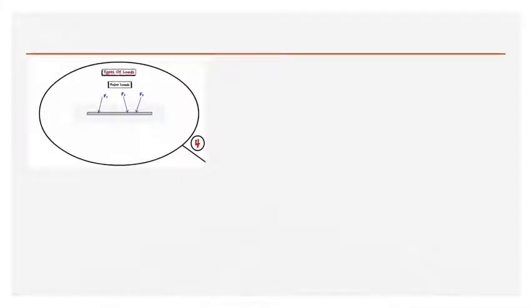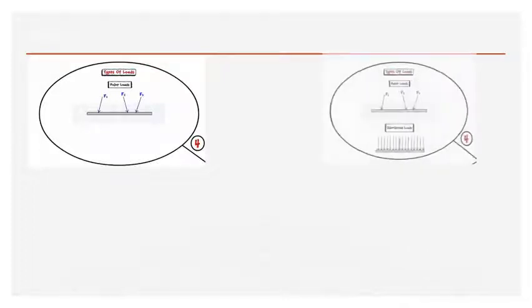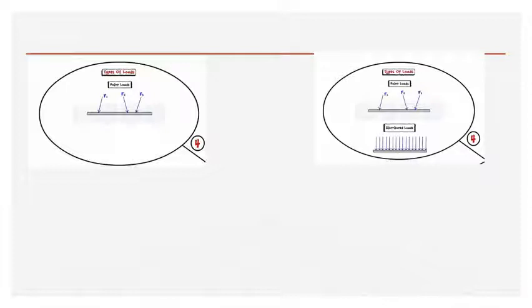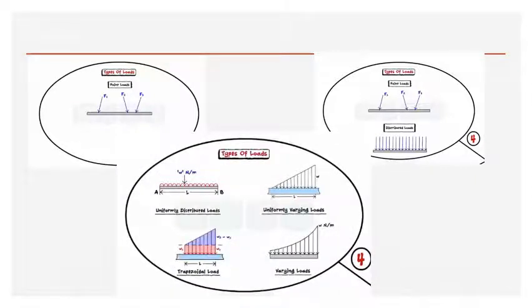There are different types of loads. Point loads are concentrated at a point. Distributed loads are spread over a considerable length. Within distributed loads, we have the uniformly distributed load (UDL) — also called rectangular loading — and the uniformly varying load (UVL), which can be triangular or trapezoidal. There is also a varying load in a curved pattern. We know how to find the equivalent or resultant load of UDL and UVL.